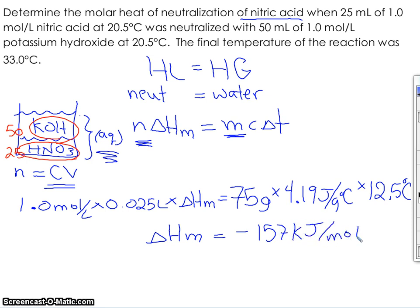Remember, the negative just means that it's exothermic. And I think I need two significant digits, so I have to change that to negative 1.6 times 10² kilojoules per mole.